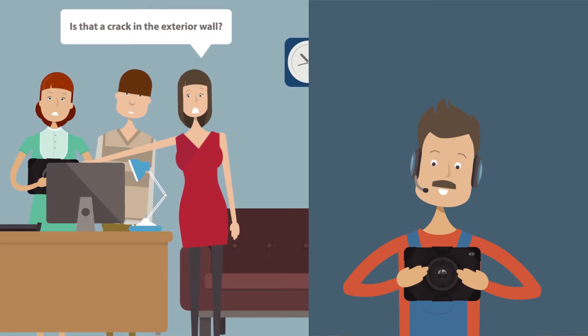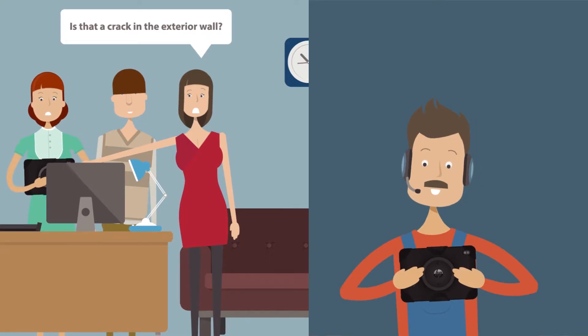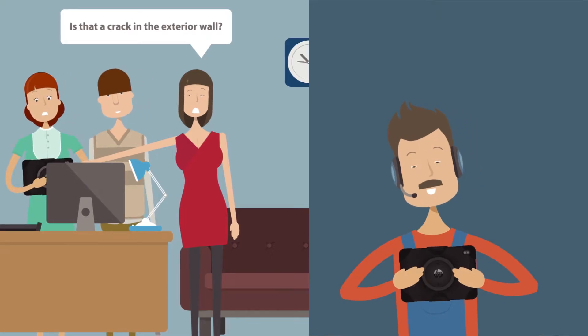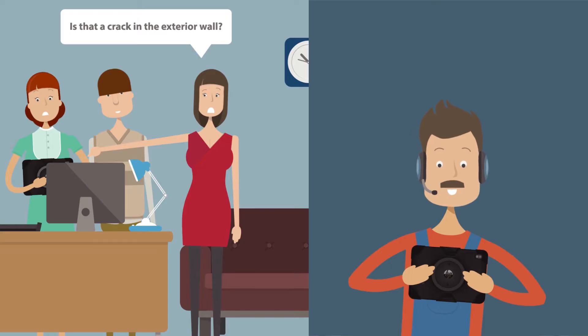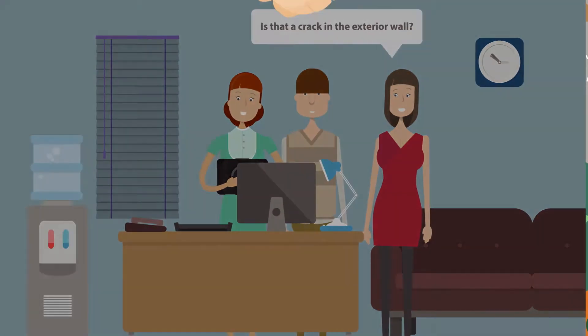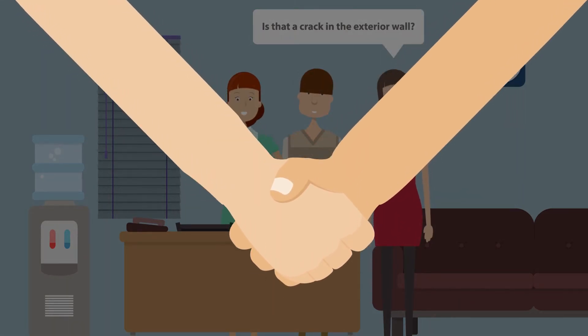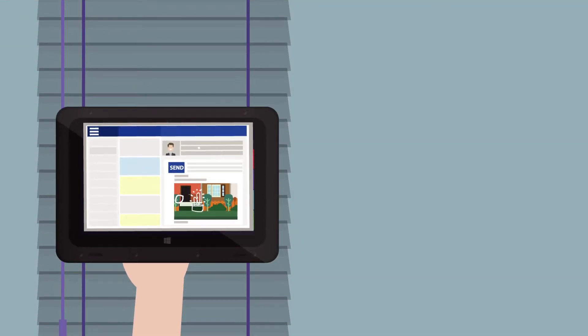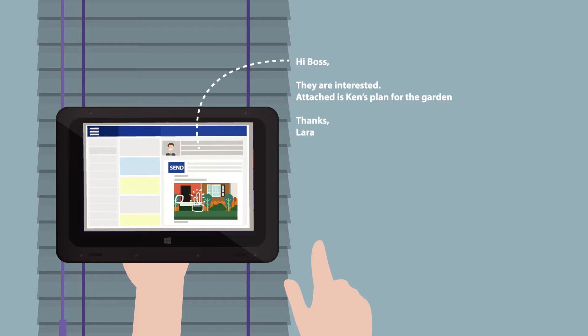When things do need sorting, Lara is able to quickly contact the building site foreman at the property using Skype for Business. This ability to connect with tradespeople even whilst they are on the job saves Lara and the prospective buyers many wasted hours when it comes to finding answers fast.